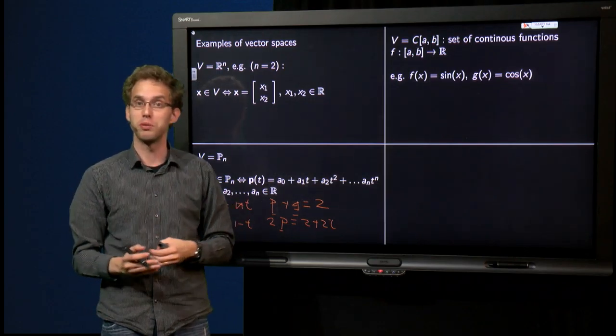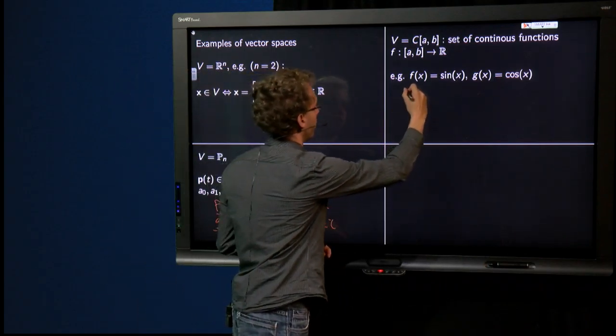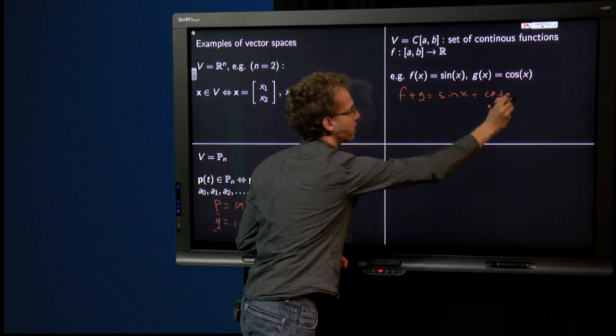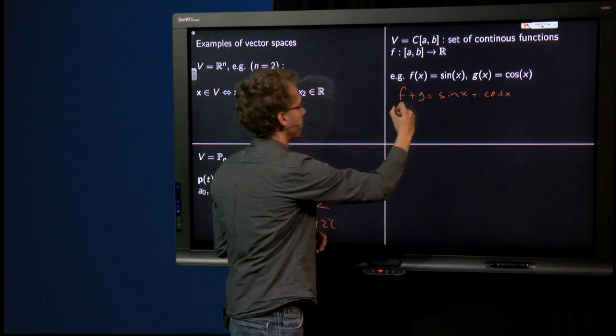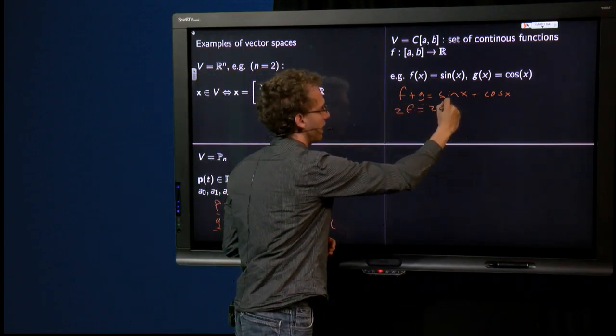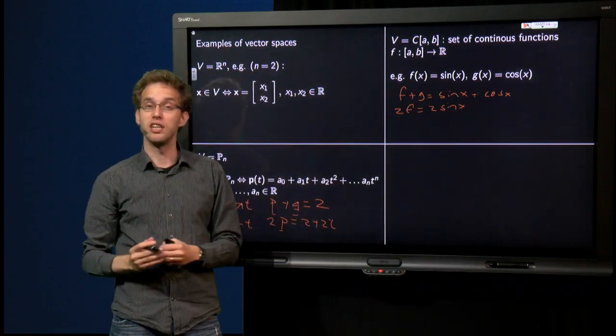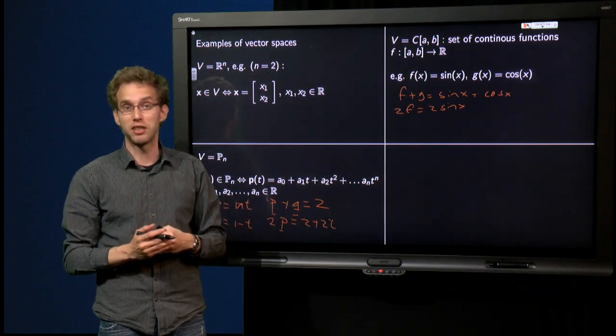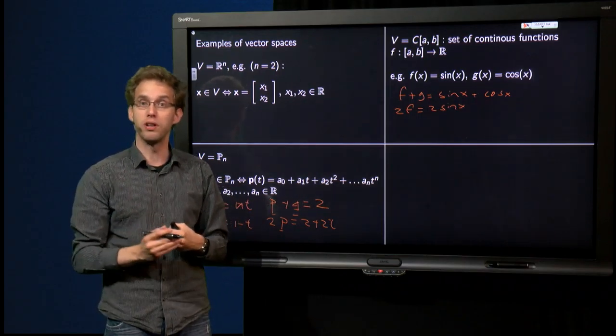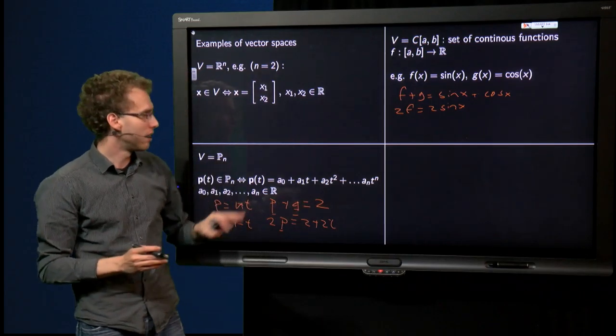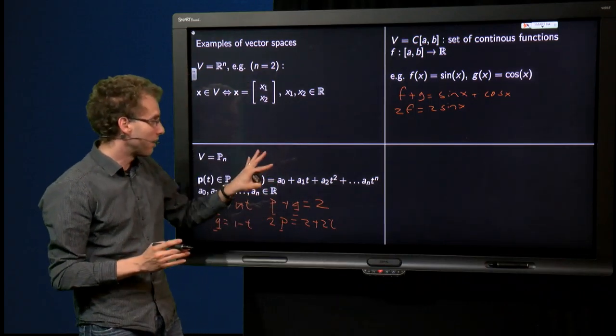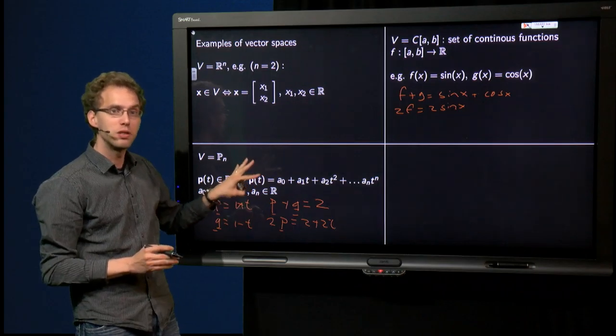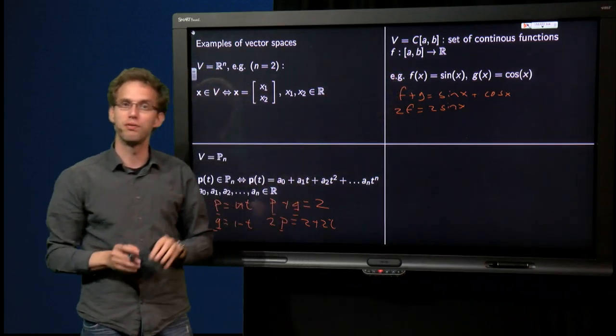What is the addition and scalar multiplication here? Well, again, pointwise. f plus g equals sin(x) plus cos(x), again a continuous function. And 2 times f is just 2 times the function sin(x). That's again a continuous function. So also this set, the set of all continuous functions, has a vector space with the usual pointwise addition and pointwise scalar multiplication. This set resembles this one. Here you have only the polynomials, here you have all continuous functions. So in a sense this one is bigger. We will work mainly with the polynomials, because this already goes a bit too far.